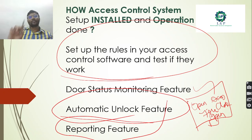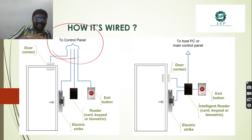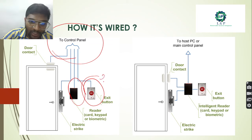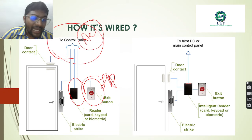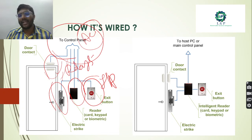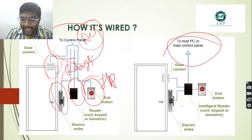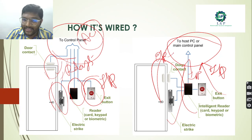There are two different wiring methods. In the first method, the control panel is installed near the doors. Card readers and exit buttons are the inputs, and the outputs are connected to the main control. Exit buttons are also inputs, and the outputs are controlled by the relay inside the access control panel.